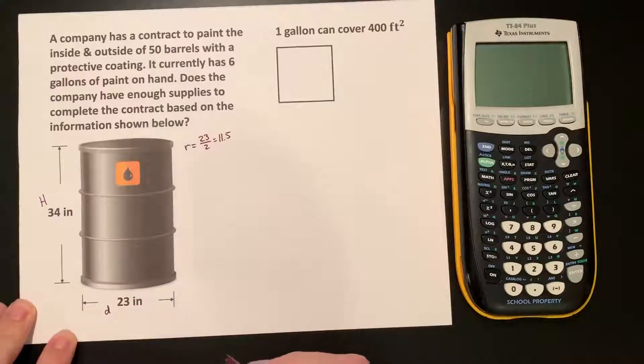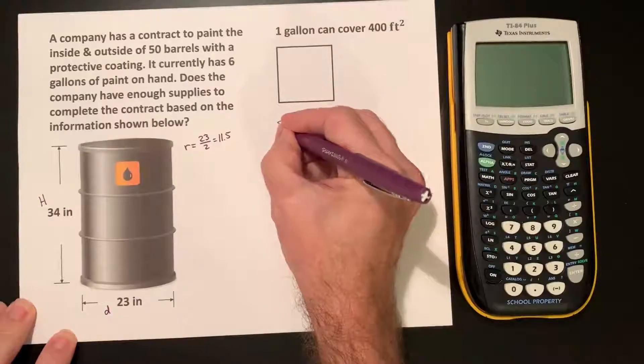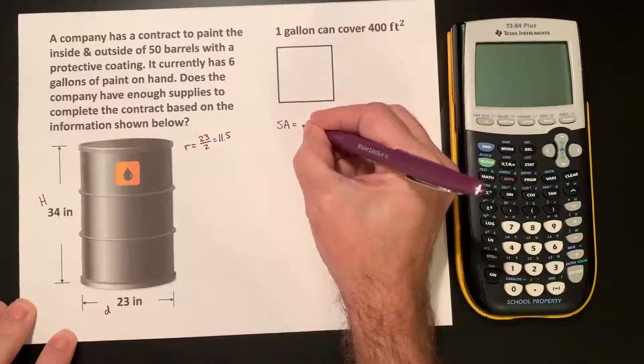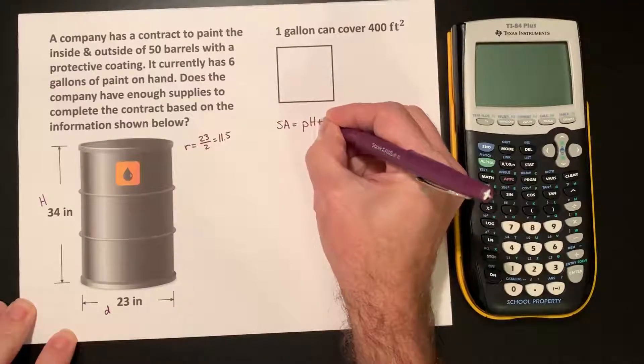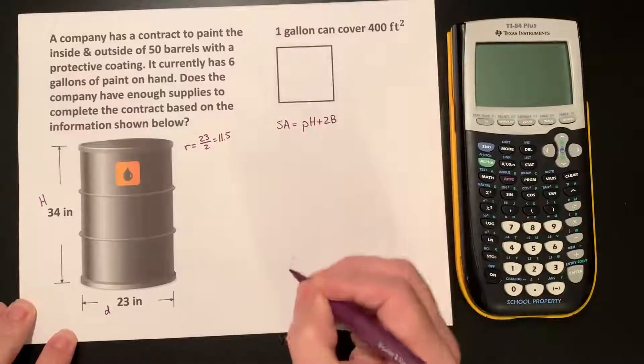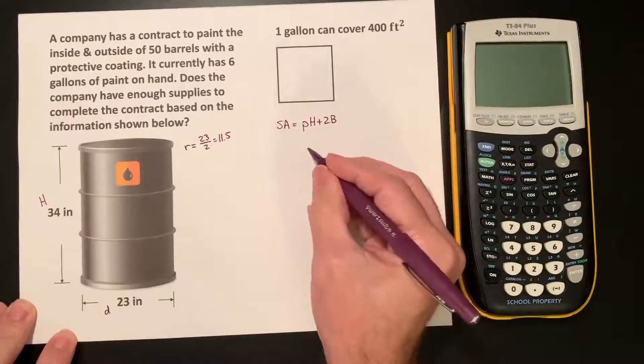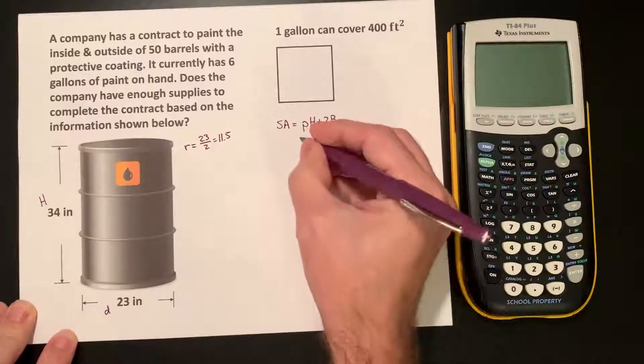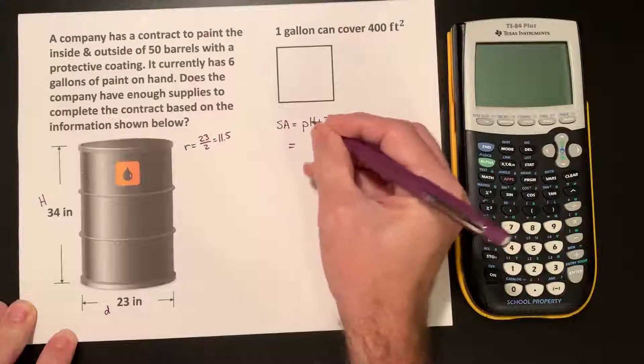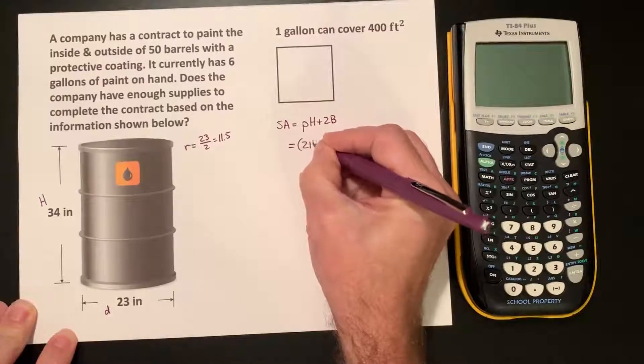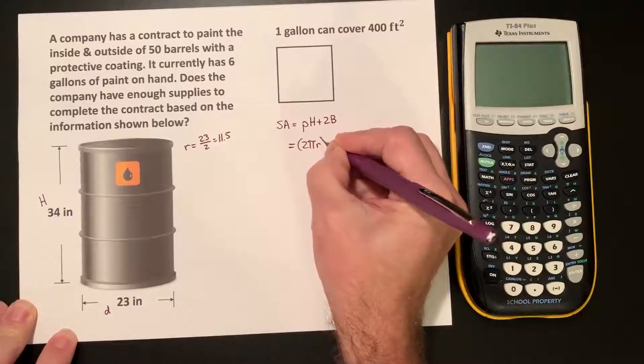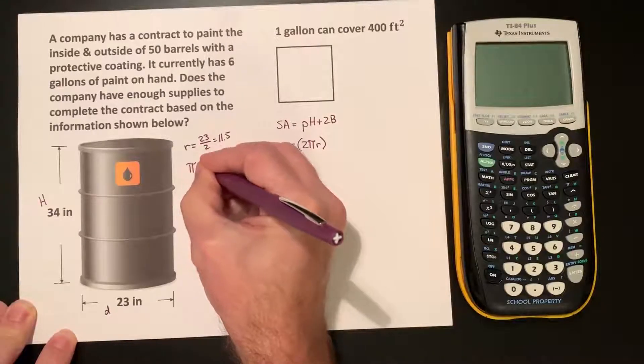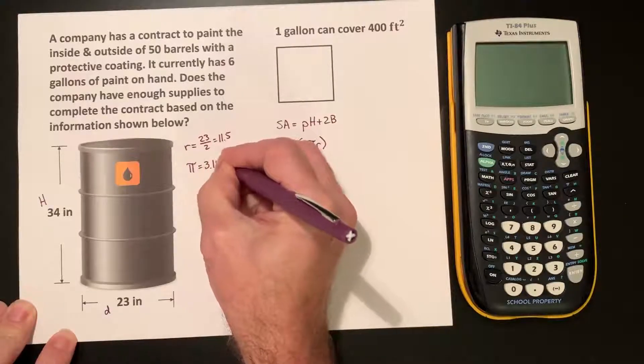Well, the surface area of any cylinder is PH plus 2B. Now, P represents the perimeter of the base, and the base is a circle, so that means it's the circumference of the circle. So, we have 2πr, and of course, we're going to be using π as about 3.14.